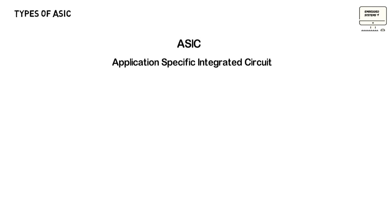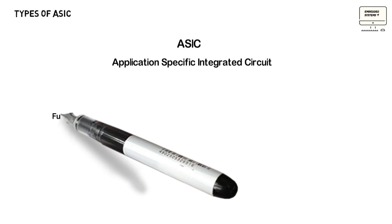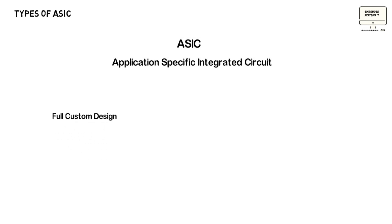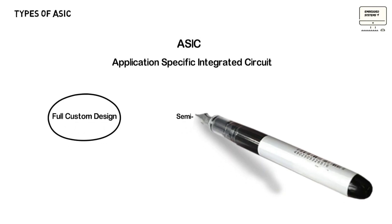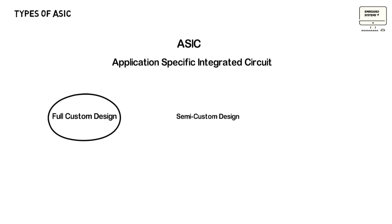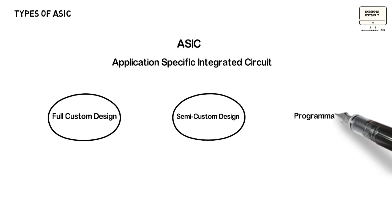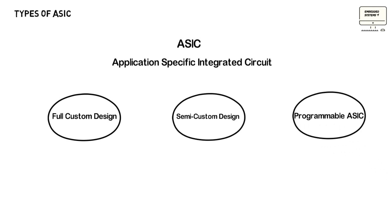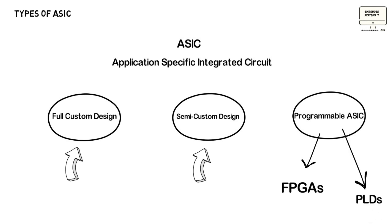There are basic categories of ASIC designs: full custom design, semi-custom design, and programmable ASIC. Programmable ASICs include FPGAs and PLDs. We've already made a video about FPGAs — I'll put the link in the description below. Today we're going to talk about full custom design and semi-custom design.